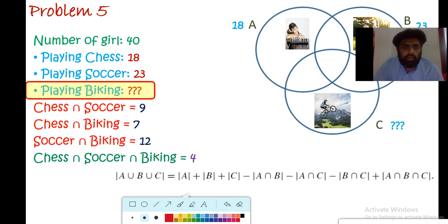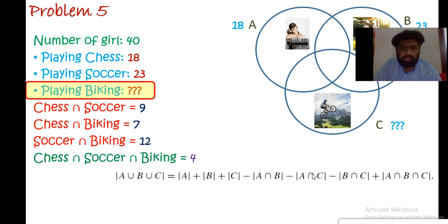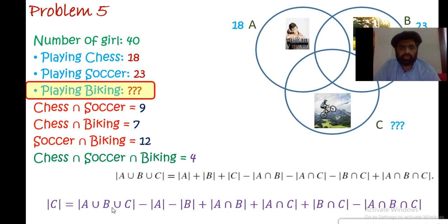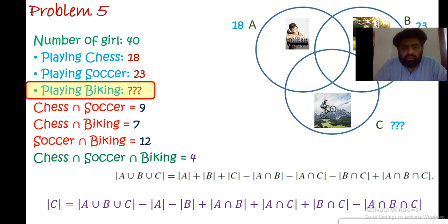We now have the formula, and the only unknown is C — the number of girls who like biking. It's simple algebra: move C to the left side and all other known terms to the right side, plug in the given numbers, and solve. This problem is done.